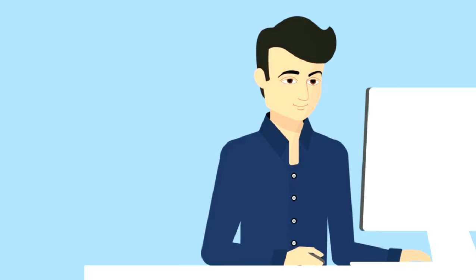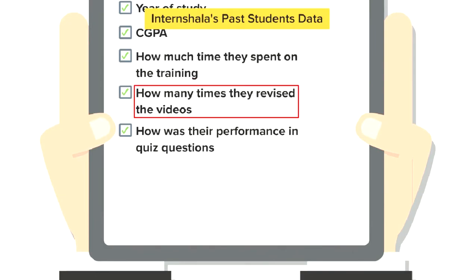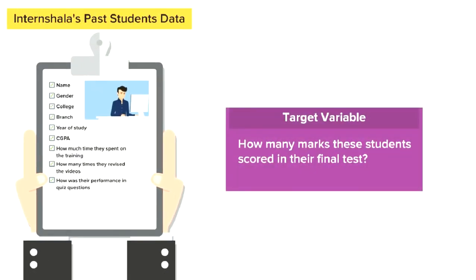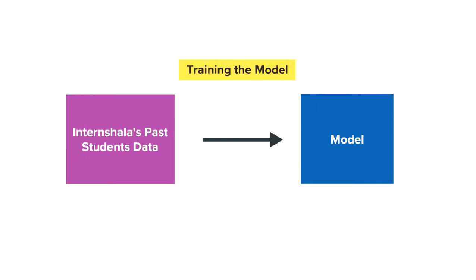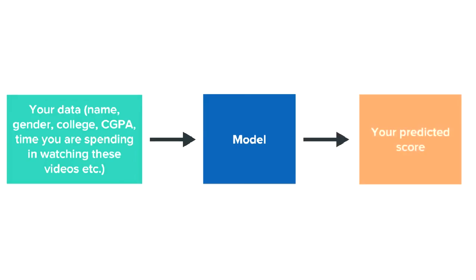Let us consider another example of supervised learning. Let us say at Intern Shala, we are very interested in predicting how many marks you would score in your final test for this training. For this, we have data of past students who have taken this training — data such as name, gender, college, branch, year of study, their CGPA, how much time they spent on training, how many times they revised the videos, how was their performance in quiz questions, etc. We also have data on the target variable — that is, how many marks these students scored in the final test. A supervised learning model can be trained on this data and can later predict how many marks you would score in the final test. Isn't that cool?